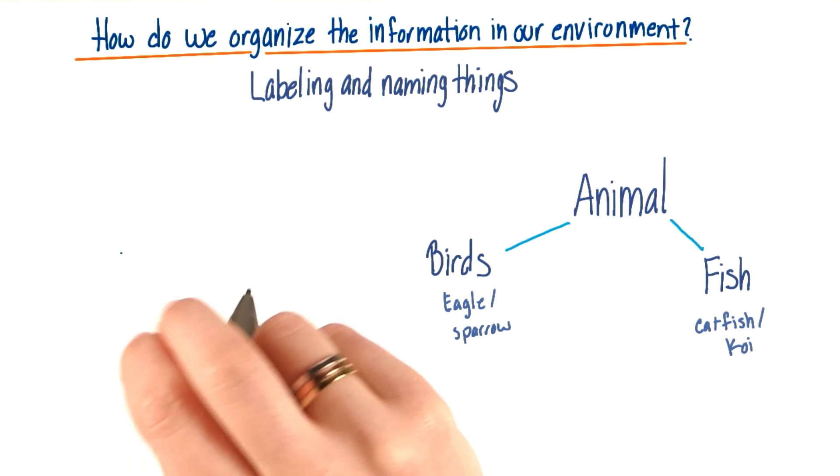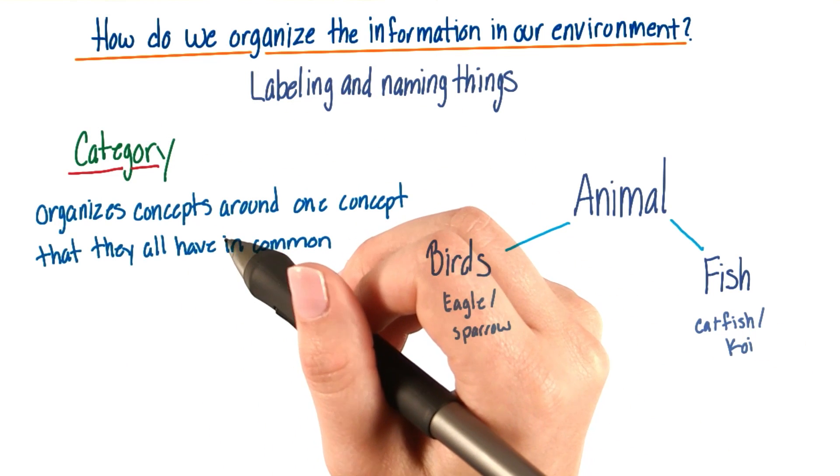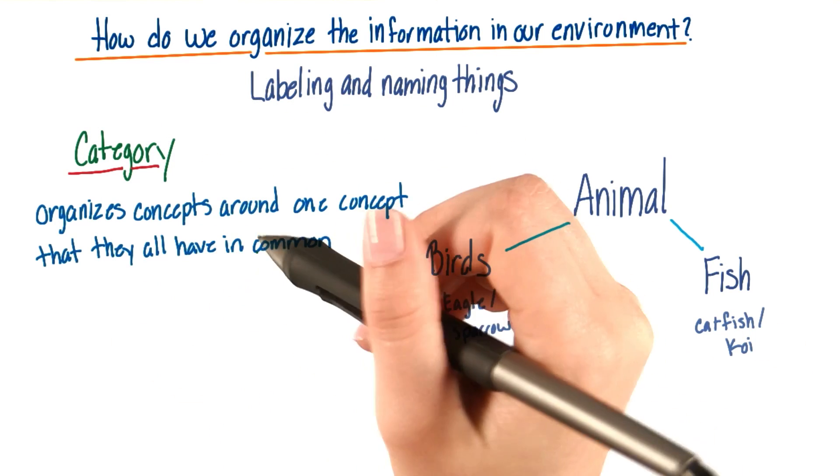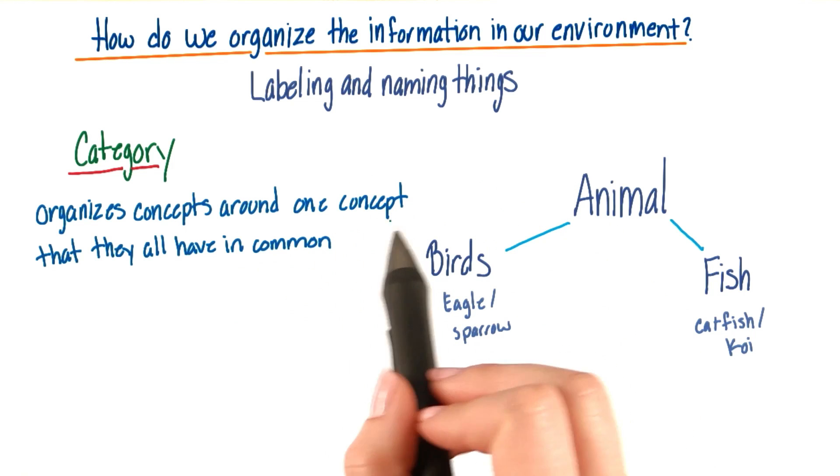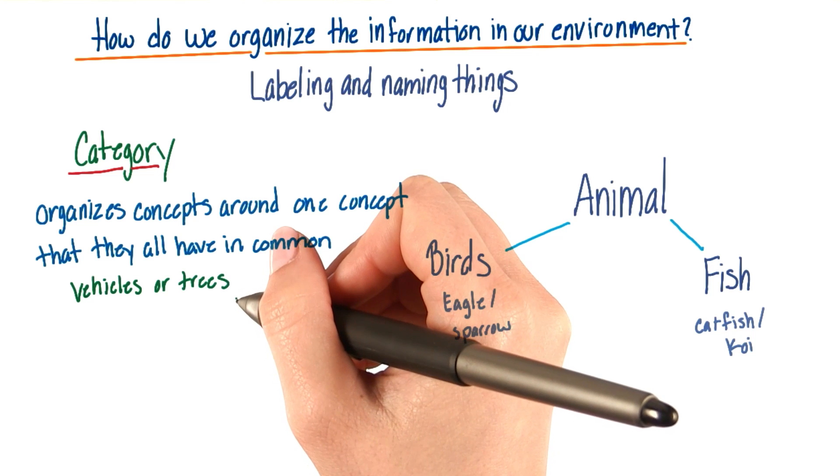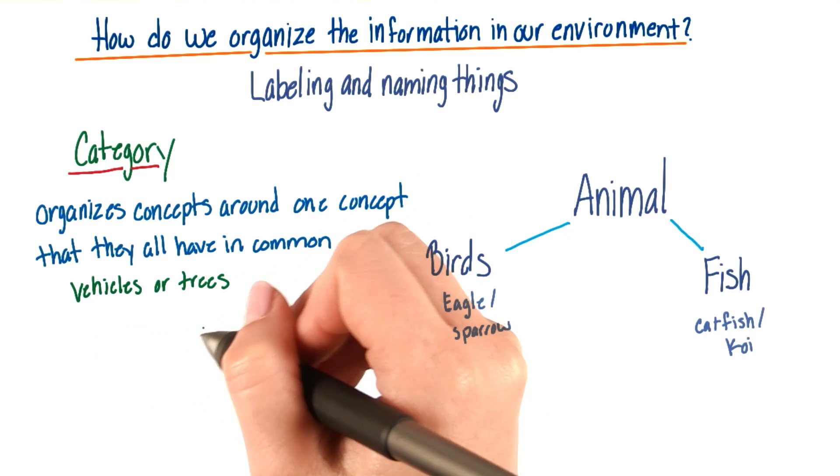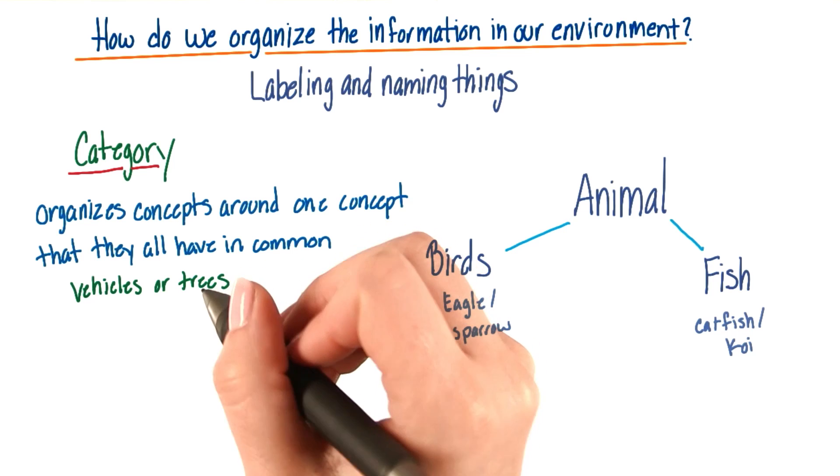Now, there's two last definitions we need to address here. The first is category. A category is when multiple concepts are organized around one concept that they all have in common. For example, vehicles or trees. We can have all the different types of vehicles, or all the different types of trees organized around this category.